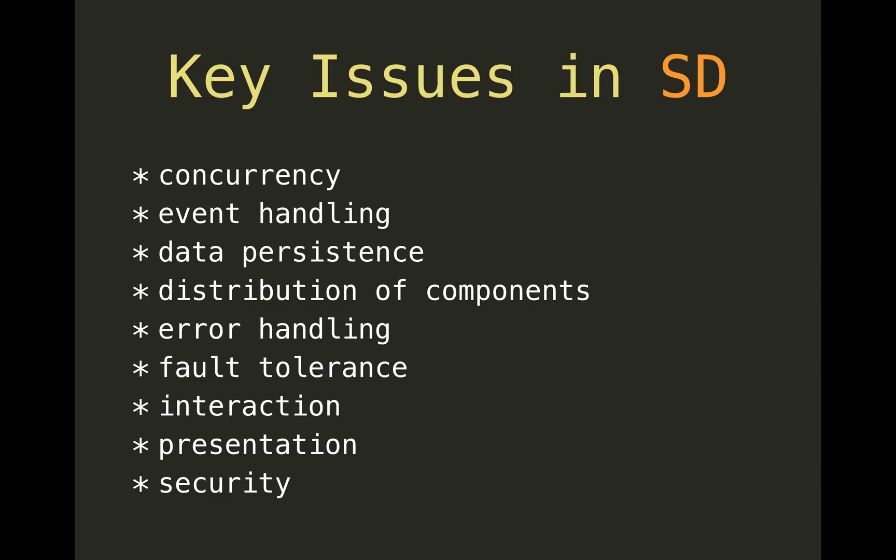Key issues in software design — there are many, but these are the omnipresent ones: concurrency, dealing with parallel, distributed, and other forms of computation; event handling, building reactive apps; data persistence, dealing with long-lived data; distribution of components and software across hardware; error handling and fault tolerance; and presentation and security. These are pretty common across just about any kind of software engineering.